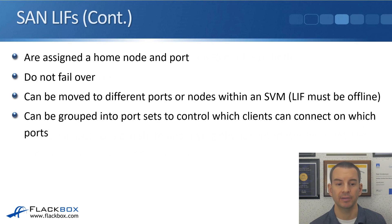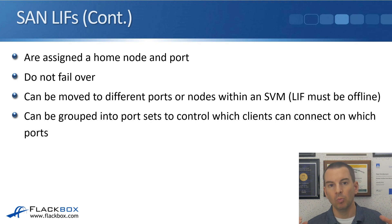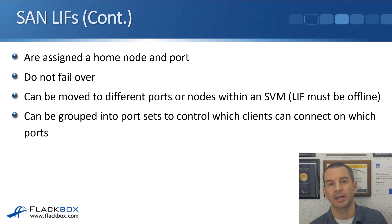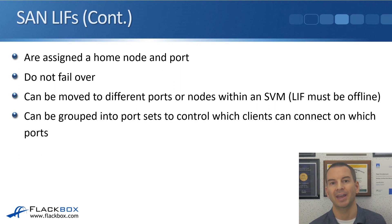Still talking about SAN LIFs — they are assigned a home node and a home port, the normal underlying physical port where they live. That's the same as for NAS LIFs. But a difference is that SAN LIFs do not fail over. From a NAS client's point of view — CIFS or NFS — it connects to a single IP address and only knows about that one IP address. So if the path to that IP address goes down, the storage system needs to fail over to a different port so the client can still reach that same IP address.